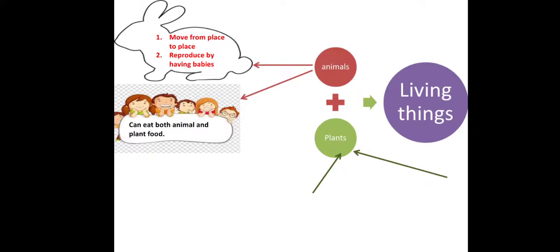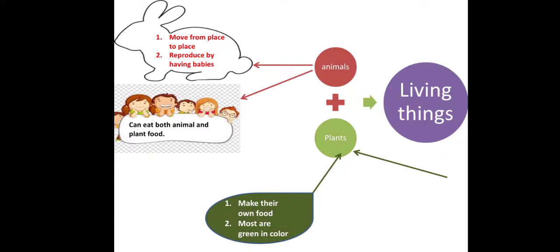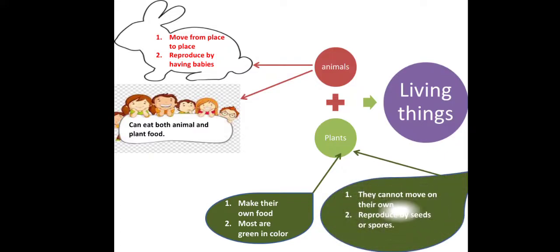What about plants? How are they different? Plants can make their own food. That means plants cannot move around, so they have to make their own food wherever they are placed. Most leaves and plants are green in color. They cannot move on their own like animals. Some plants produce by seeds — for example, rose plants — and some plants produce by spores, for example, ferns or moss.